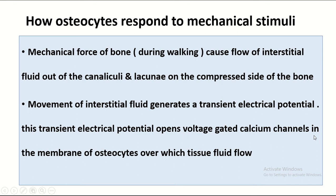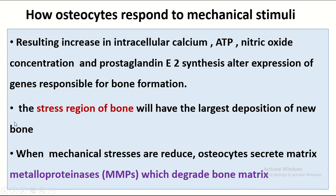This transient electrical potential opens voltage-gated calcium channels in the membrane of the osteocyte, over which tissue fluid flows, resulting in increased intracellular calcium, ATP, nitric oxide concentration, prostaglandin E2 synthesis, and expression of genes responsible for bone formation. The stress regions of the bones will have the largest deposition of new bone. When mechanical stresses are reduced, osteocytes secrete matrix metalloproteinase, which degrades bone matrix.